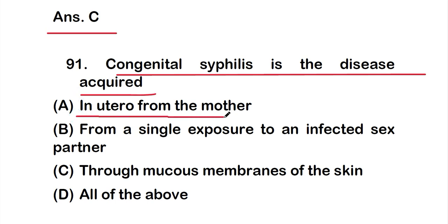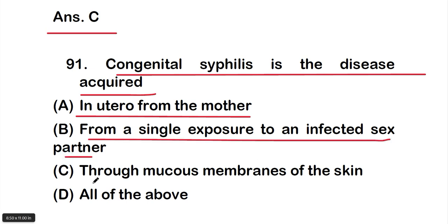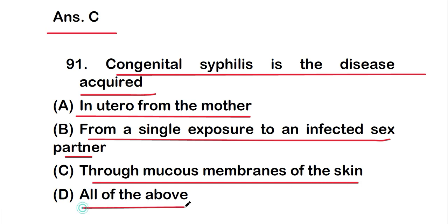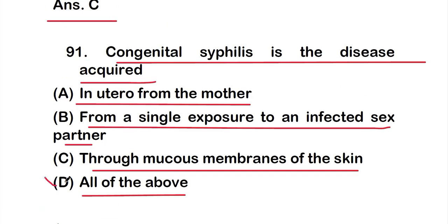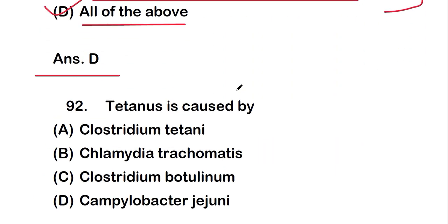Question number 91: Congenital syphilis is the disease acquired — option A: in utero from the mother, option B: from a single exposure to an infected sex partner, option C: through mucous membranes of the skin, option D: all of the above. The correct answer is option D — all of the above. Congenital syphilis can be acquired by all these conditions.